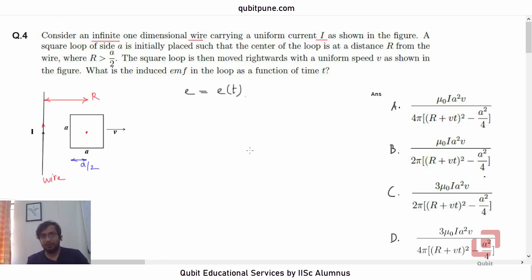So we would like to calculate the EMF induced in the loop as a function of time t. That is what we want. And we have four options with us. And in all four of them, we have R plus Vt bracket squared. So you can clearly see that all the options involve EMF as a function of time.